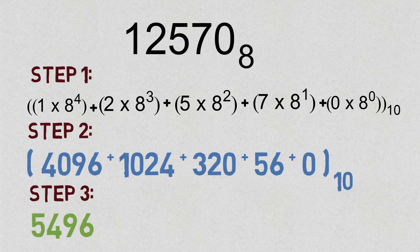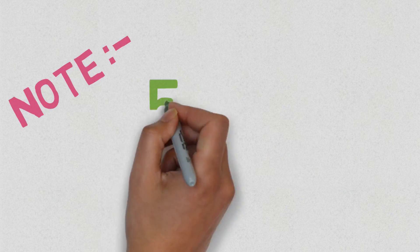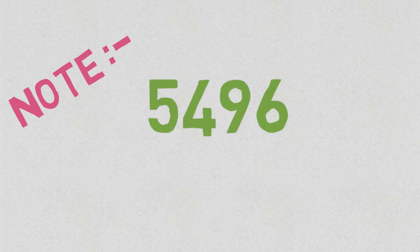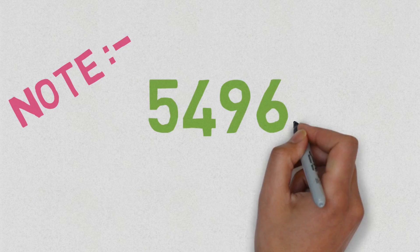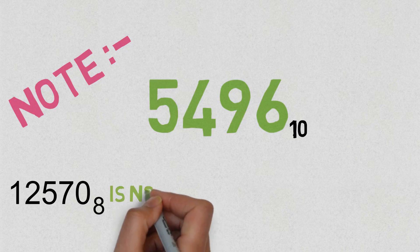So 12570 base 8 is normally written as 12570 only, but the decimal equivalent value of the octal number 12570 is 5496.